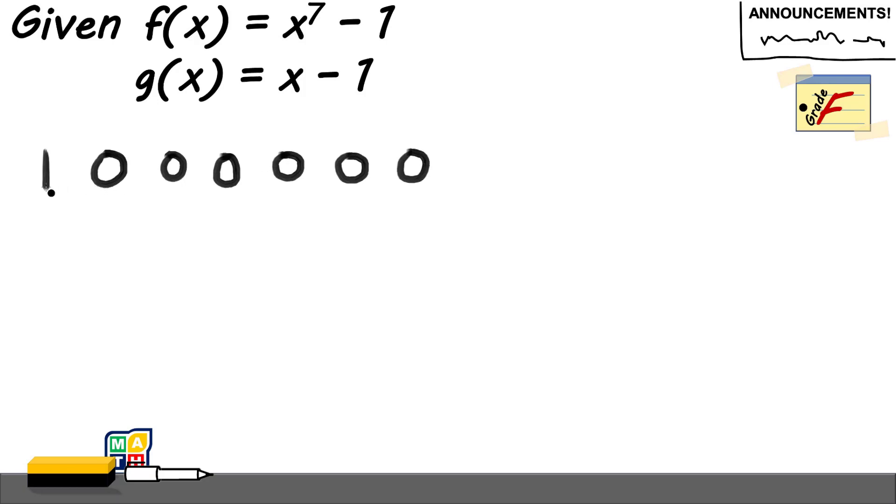Again, we have x to the power of 7, 0x to the power of 6, x to the power of 5, x to the power of 4, x to the power of 3, x squared, x, and then you have here your minus 1. So this should be considered all the time.